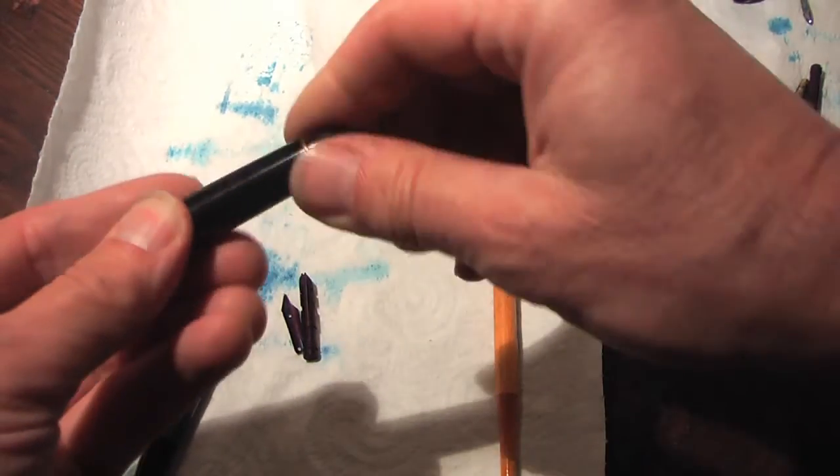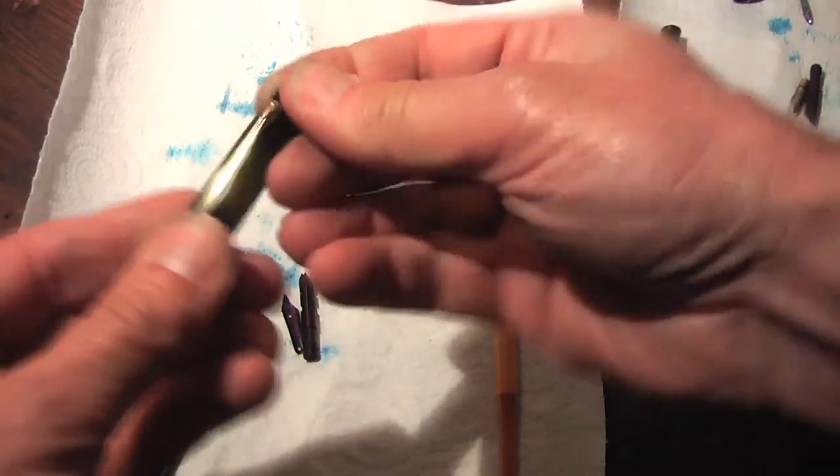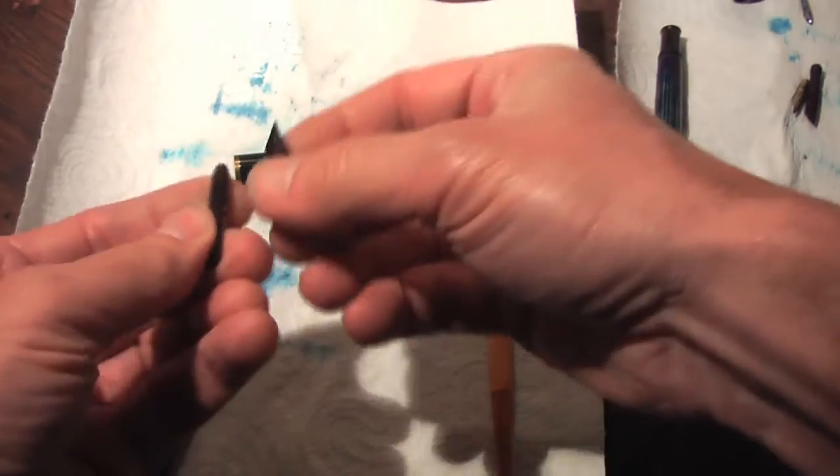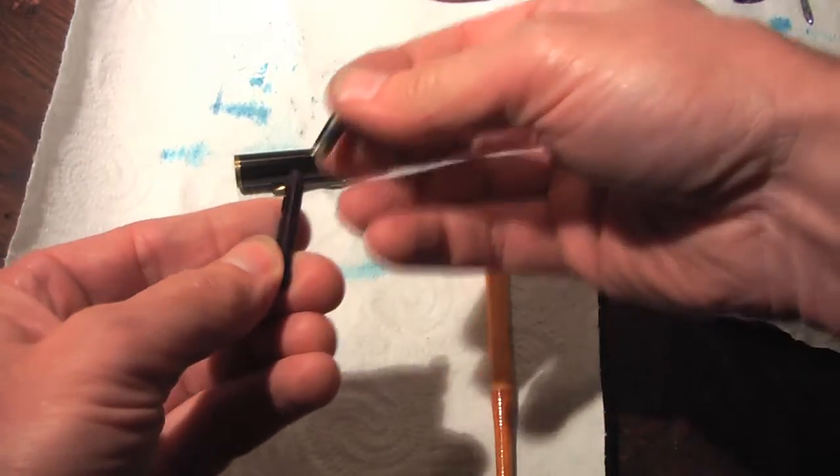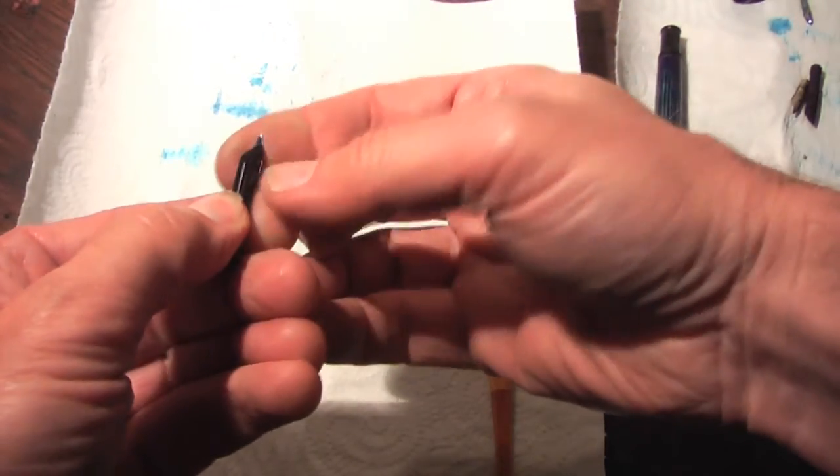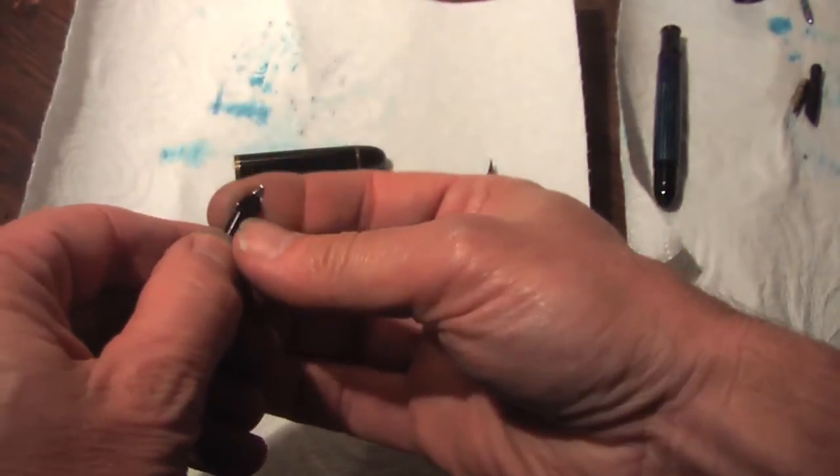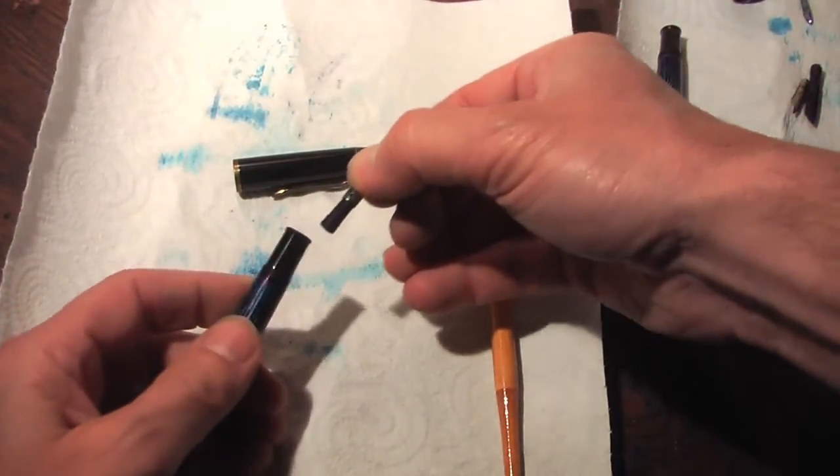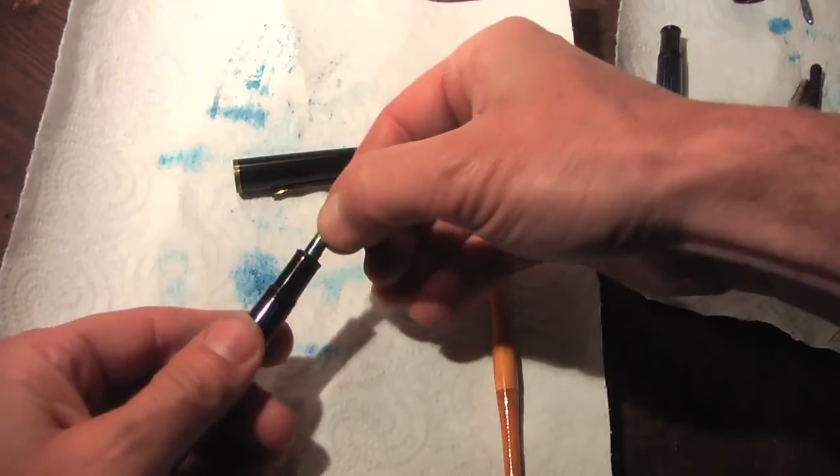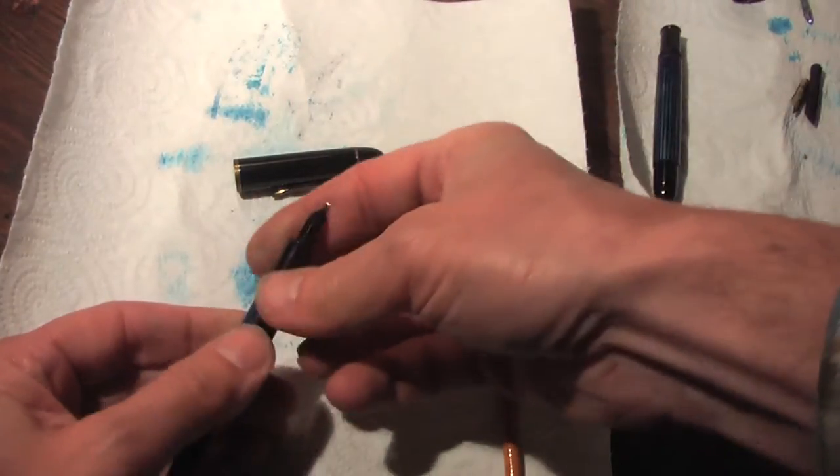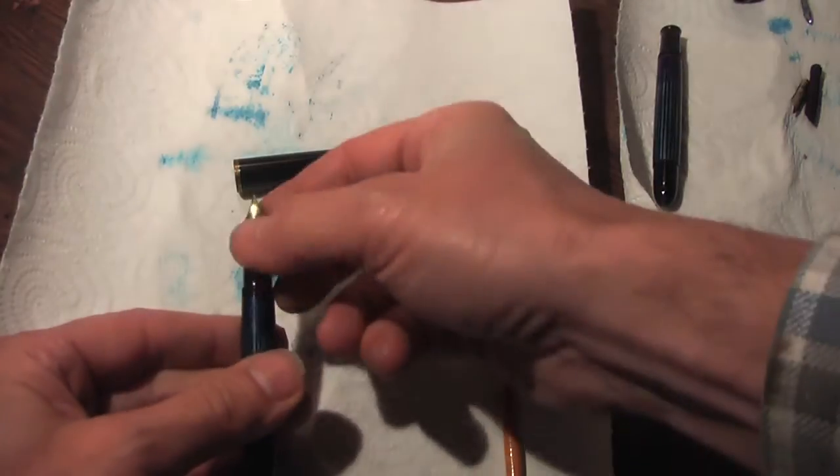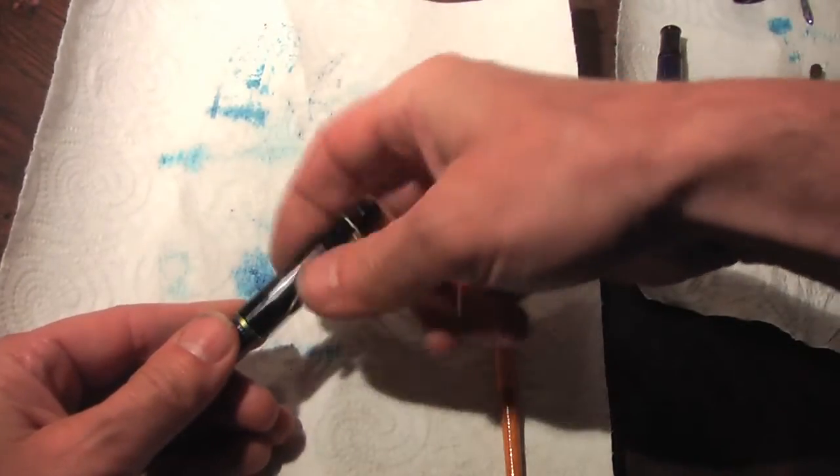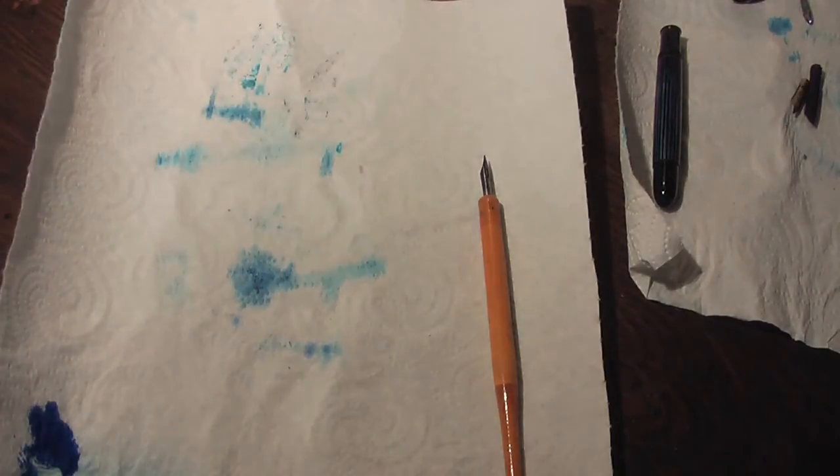On goes the little knob to fasten the clip. This is very nice with these Pelican pens - you just push the nib and ink feed into the pen and the first one is assembled.